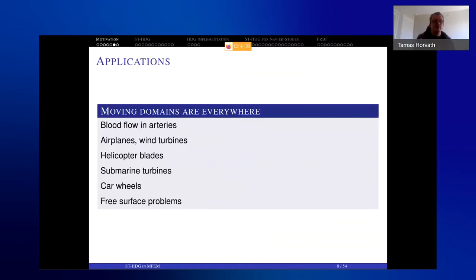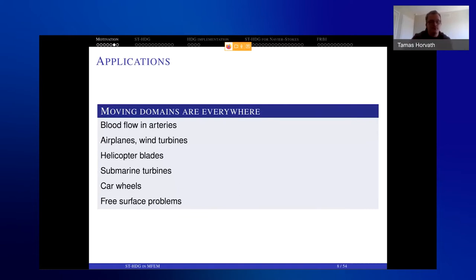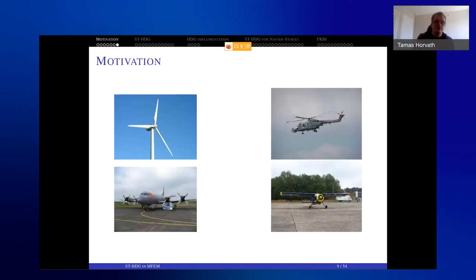As applications, you can think about moving domains in bioengineering, aerospace engineering, and civil engineering. Examples include blood flow, airplanes with turbines, blades, car wheels, and free surface problems where the domain moves as part of the solution. Looking at some motivational pictures, rotation is an important part of the motivation and was central to the turbine video shown at the beginning.